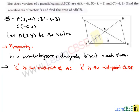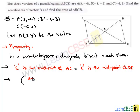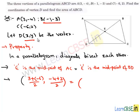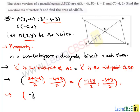Since E is the midpoint of AC and also the midpoint of BD, we use the midpoint formula: midpoint = (sum of x-coordinates)/2, (sum of y-coordinates)/2. For AC: x-coordinates are 3 and −6, giving (3 + (−6))/2 = −3/2; y-coordinates are −4 and 2, giving (−4 + 2)/2 = −1. For BD: midpoint is ((−1 + x)/2, (−3 + y)/2).